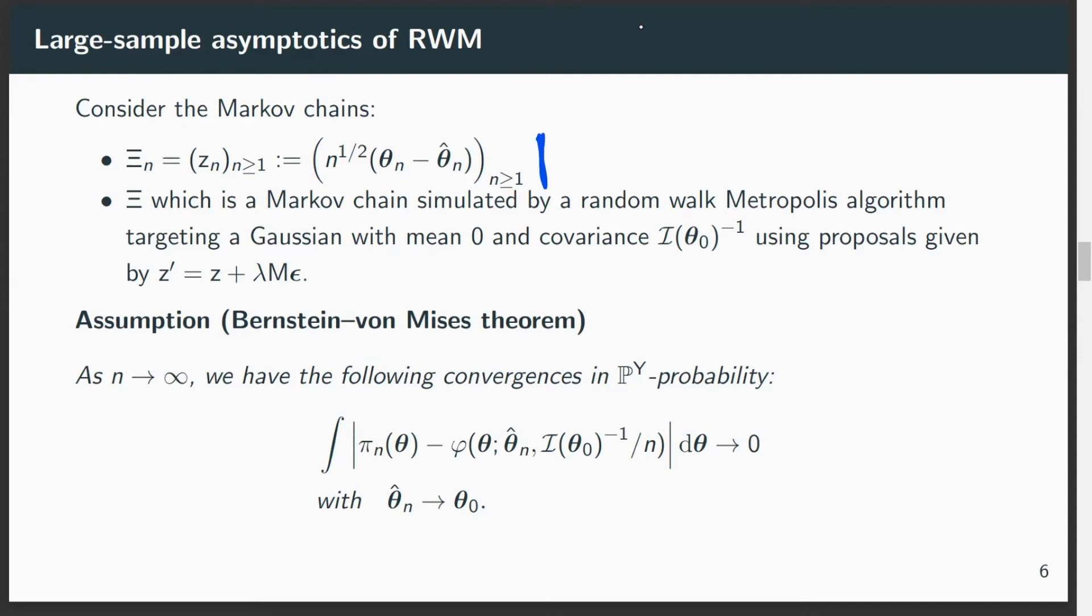Then we will show that the Markov chains converge to another random walk Metropolis algorithm that targets a Gaussian distribution with mean zero and covariance equal to the inverse Fisher information using this proposal distribution here.